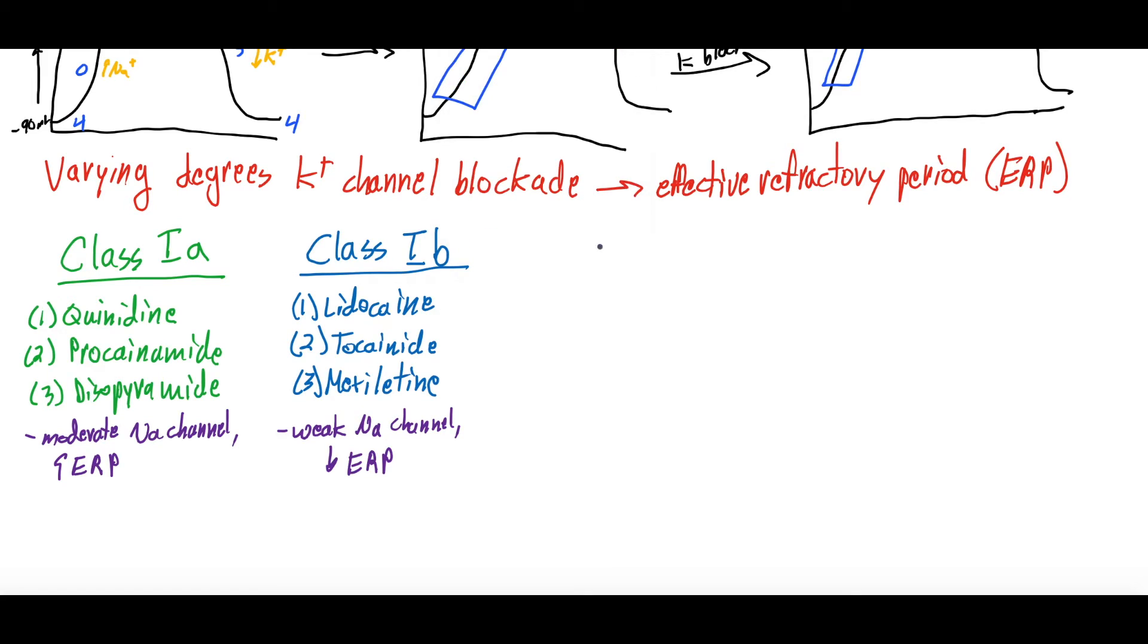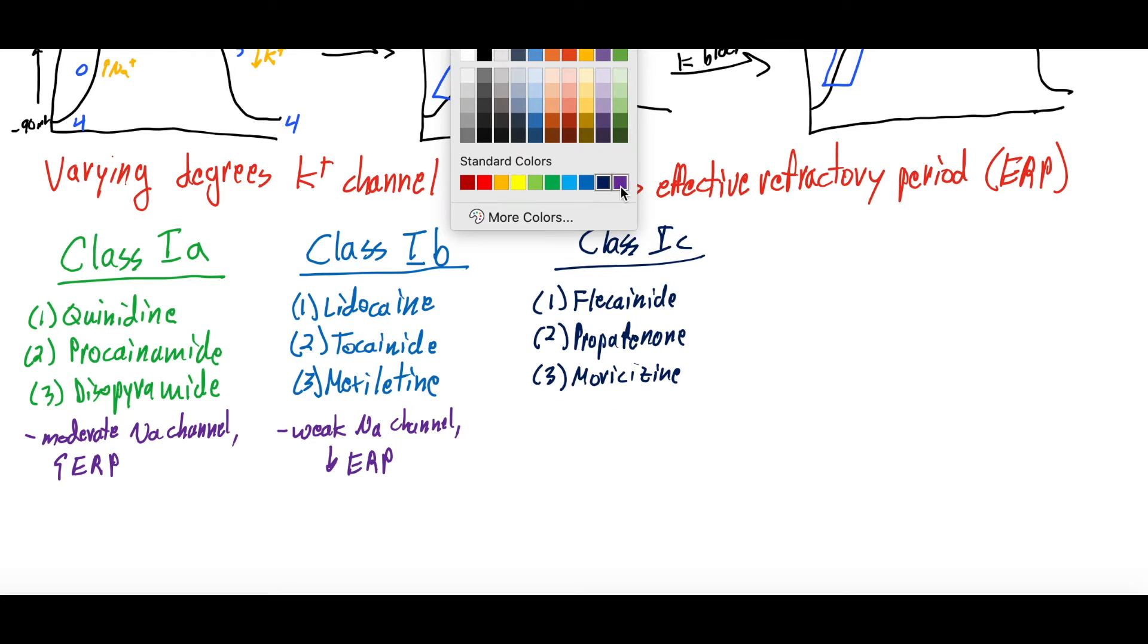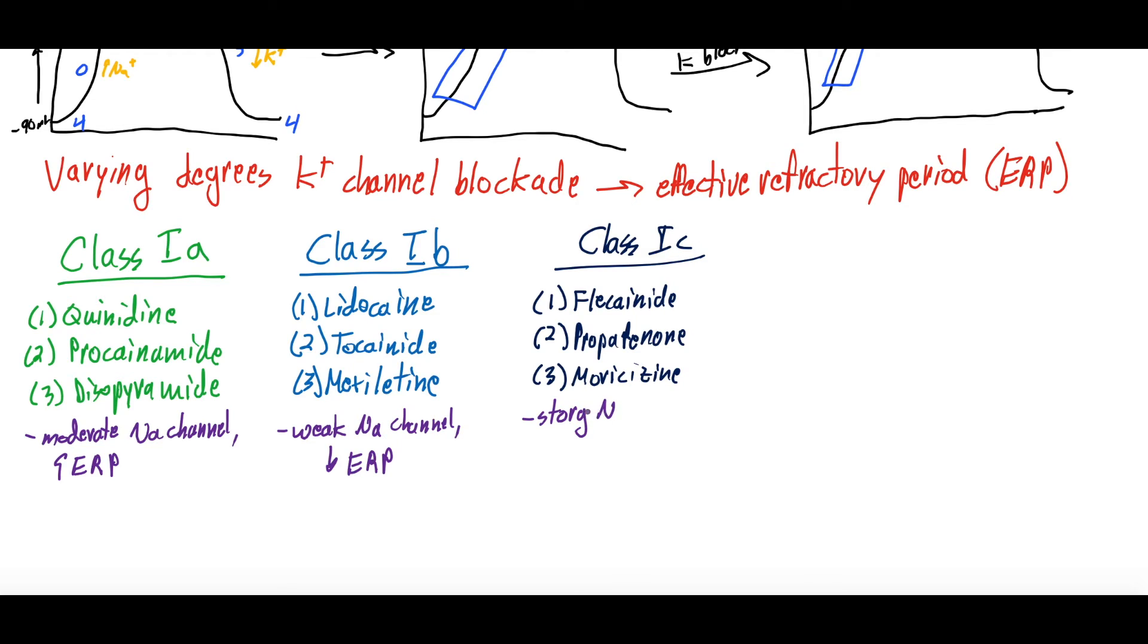And then last we have Class 1C, and Class 1C include flecainide, which is a common one that we'll see used clinically, propafenone, which is one that I think I've seen a handful of times, and then moricizine. And these are strong sodium channel blockers, and they don't change the effective refractory period.